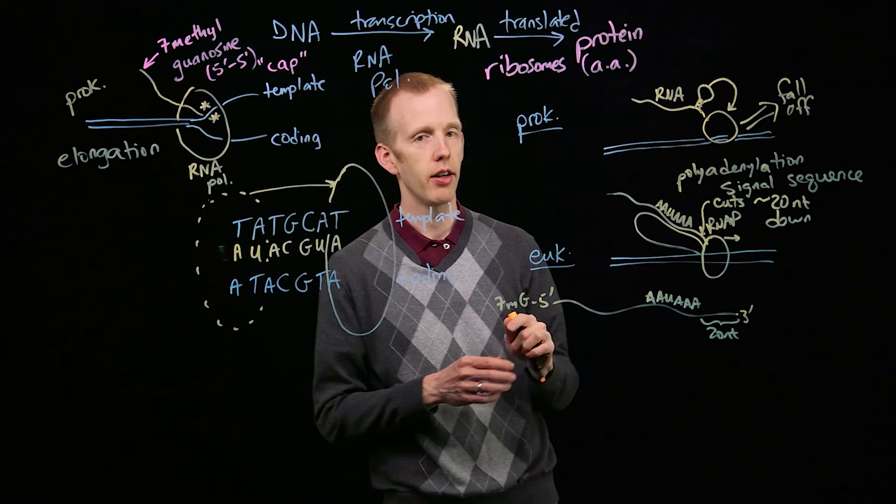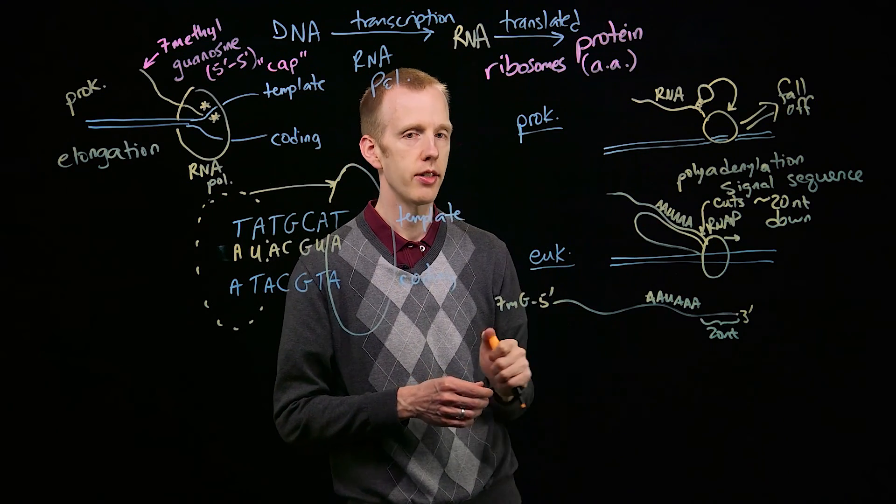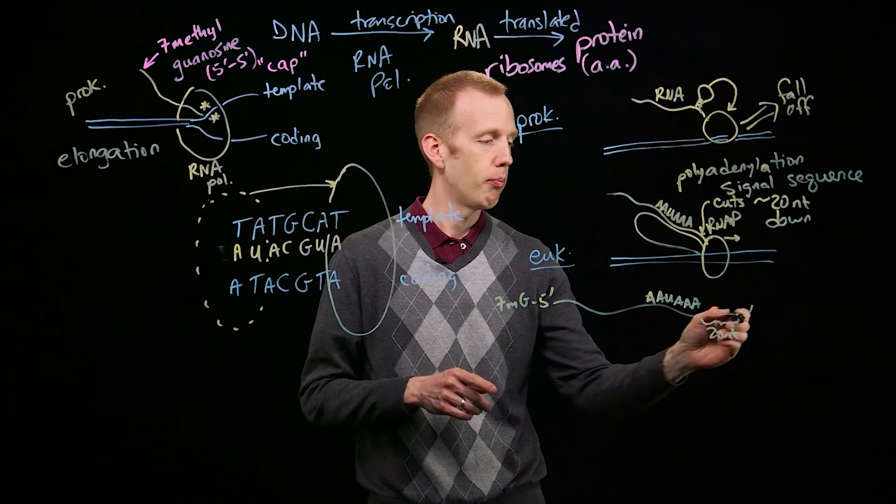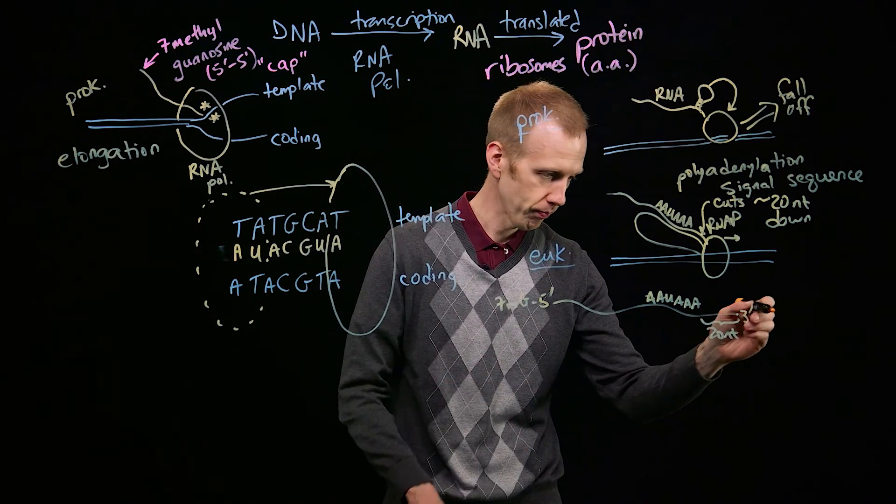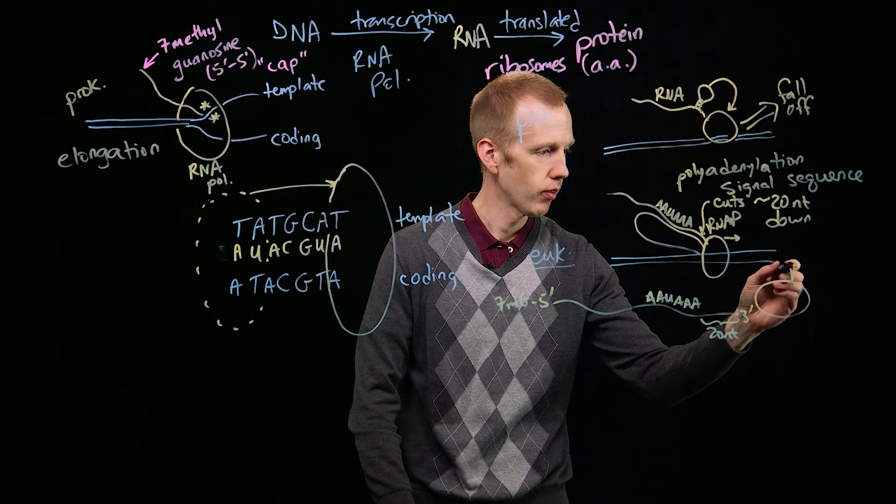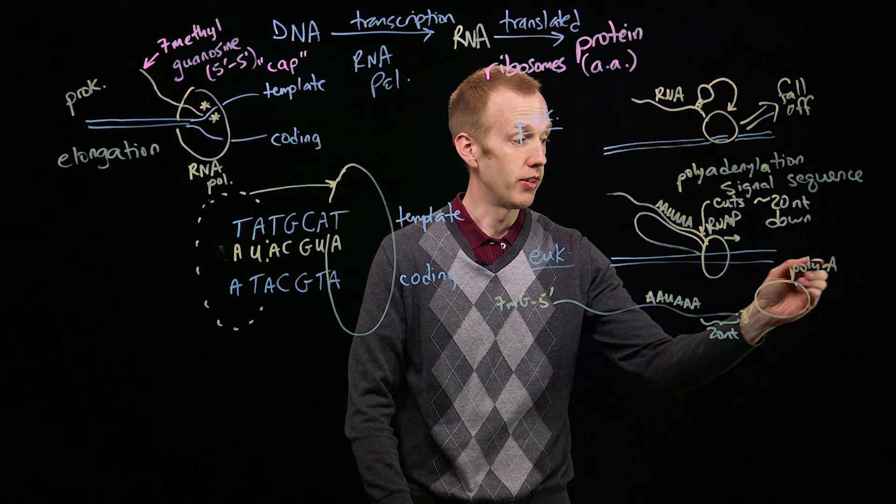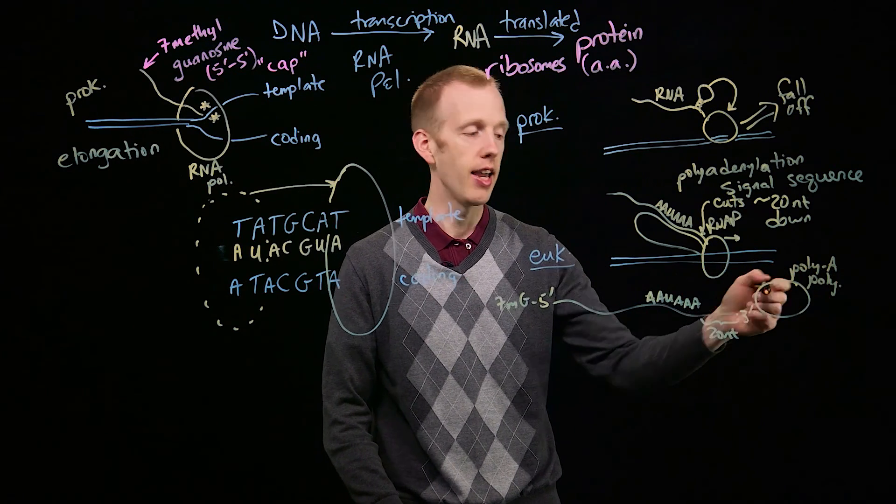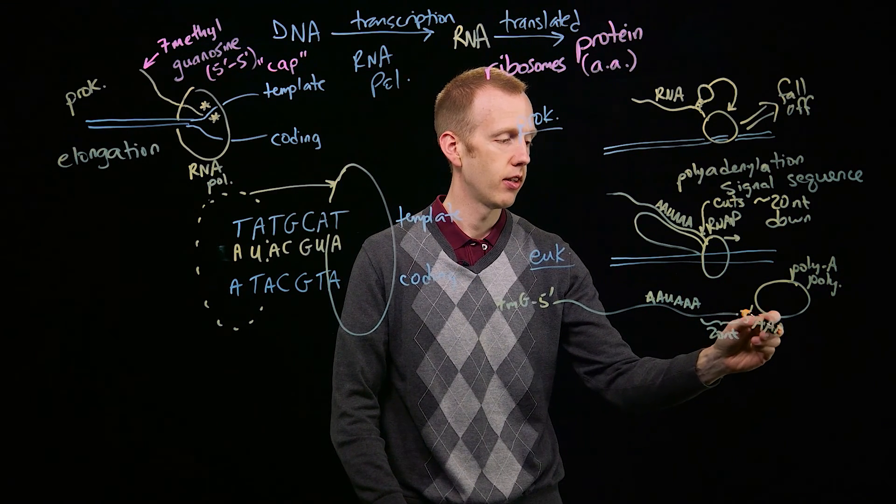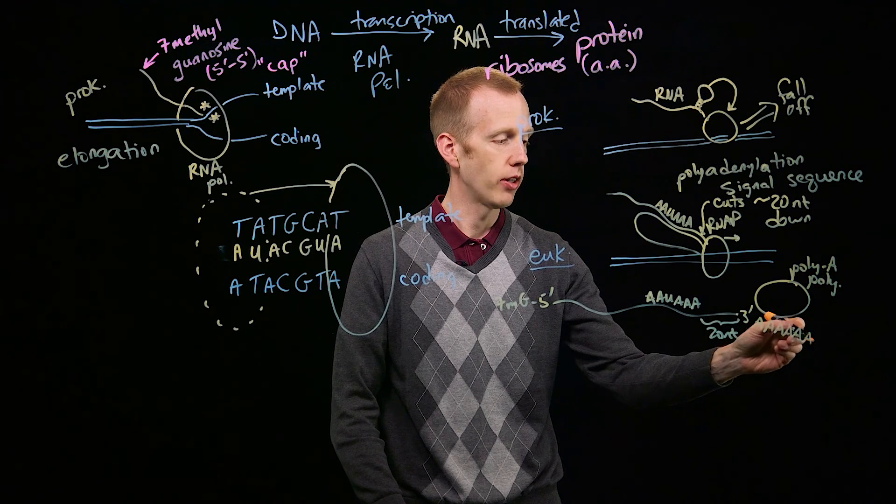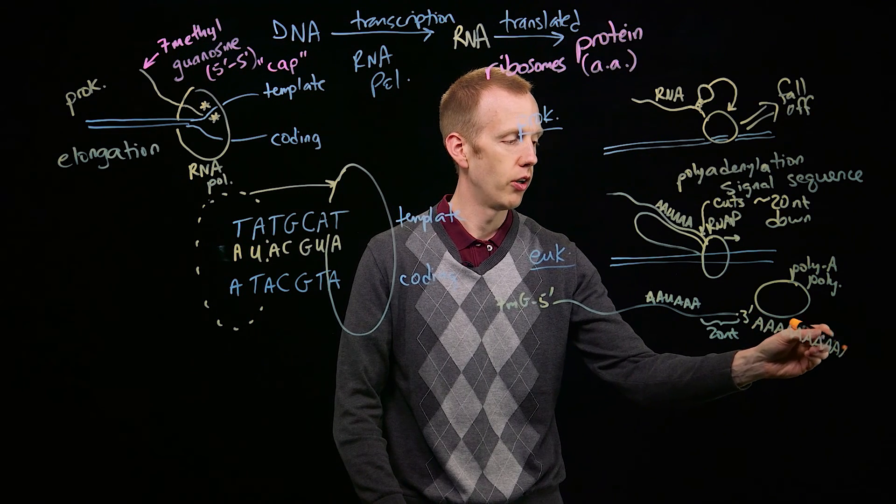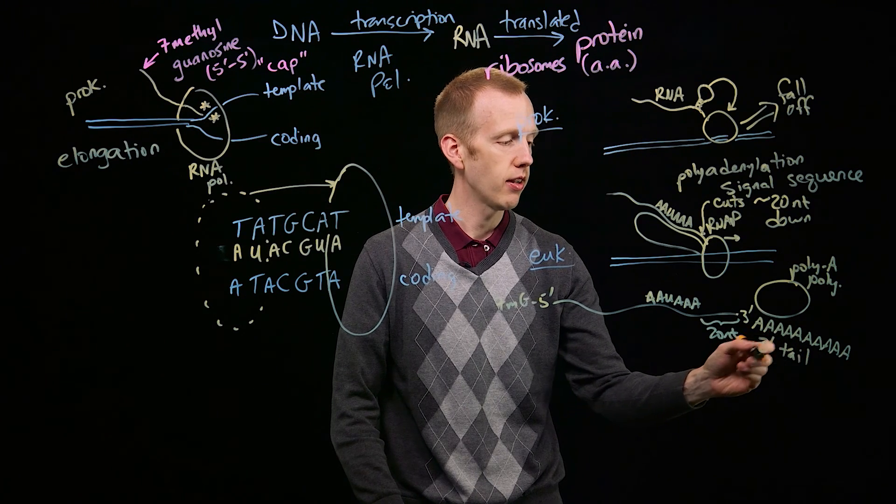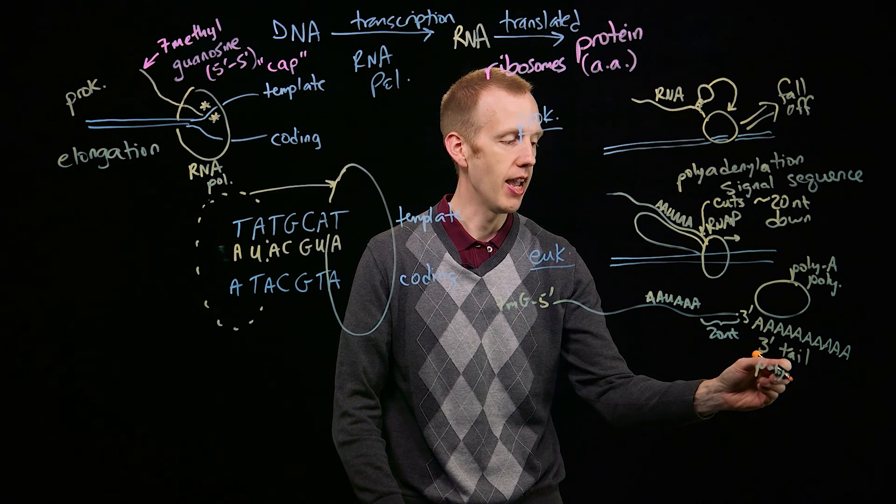The enzyme poly-A polymerase does exactly that. It polymerizes or adds poly-A, a string of A's, to the end of that transcript. This is called the 3' tail, or the poly-A, many-A tail. And that's how transcription terminates in eukaryotes.